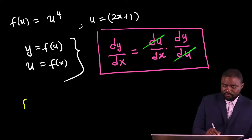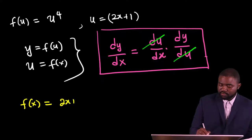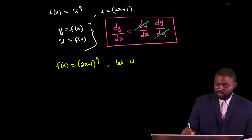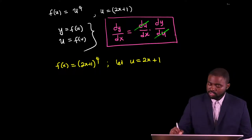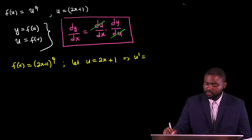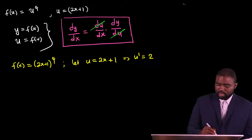If we have f of x equal to (2x + 1) raised to the power of 4, you can say let u be equal to 2x plus 1. This would mean that u prime, which is du/dx, is equal to 2.